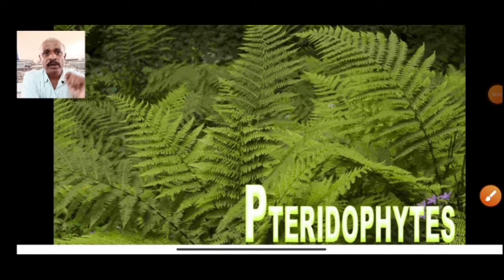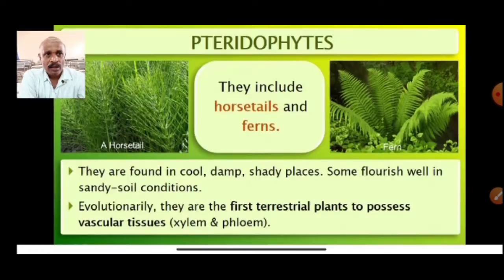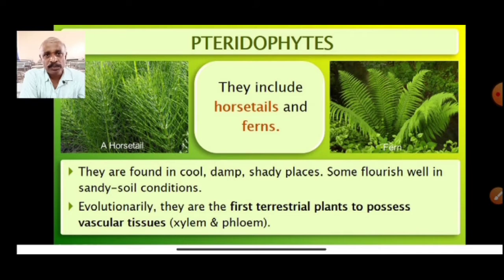Hi students, today we start with one more group in Kingdom Plantae, that is Pteridophytes. Pteridophytes are non-flowering plants. The next plant group is gymnosperms — the flowering plants. Characteristics of pteridophytes are better than bryophytes. They include horsetails and ferns.